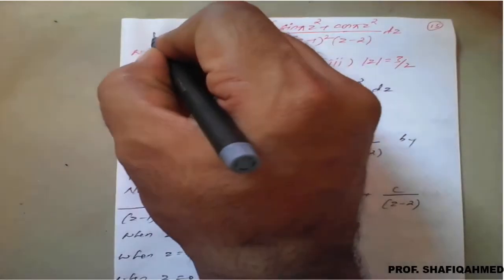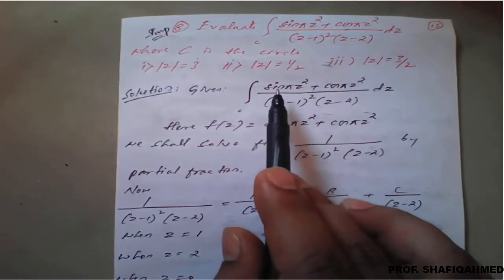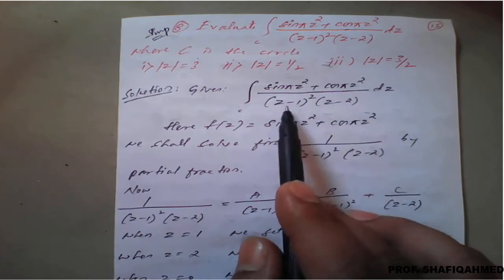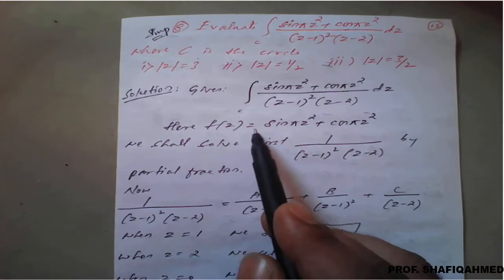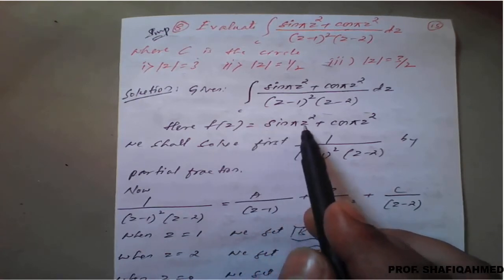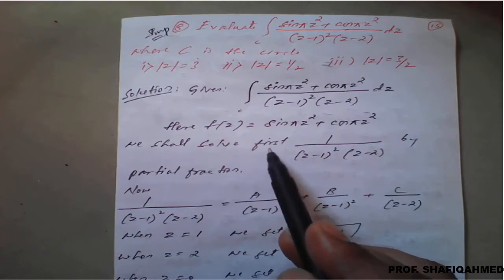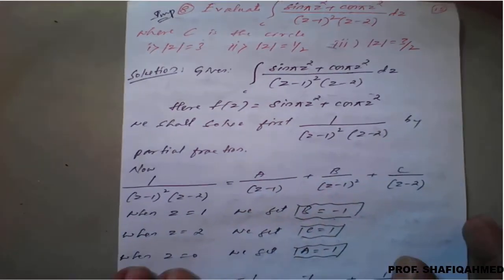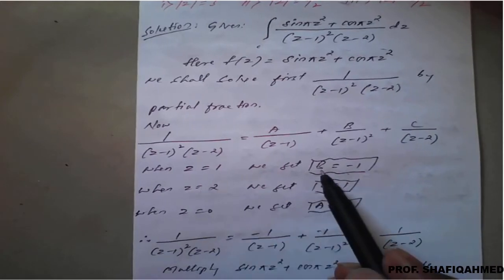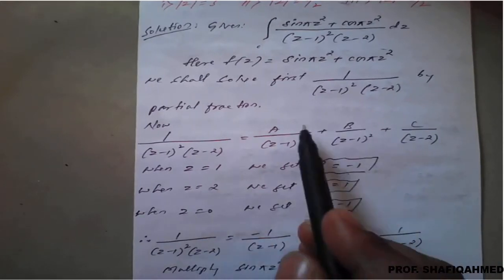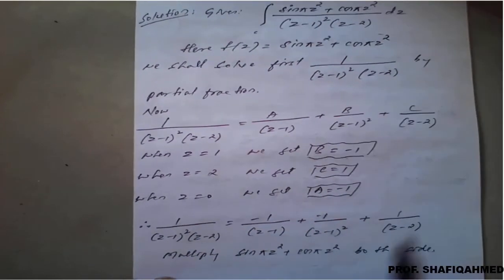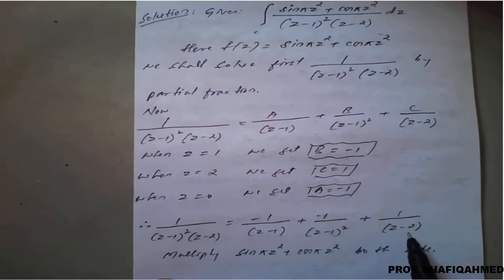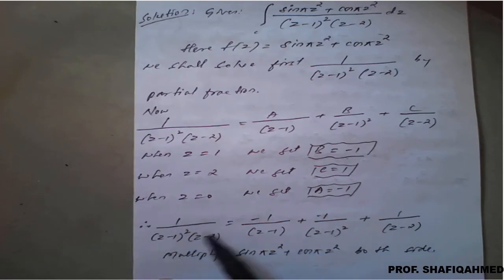This is an important examination question. Given the integration of (sin πz² + cos πz²) / [(z−1)²(z−2)], consider f(z) = sin πz² + cos πz². We first simplify 1 / [(z−1)²(z−2)] using partial fractions, and we get the values: b = −1, c = 1, and a = −1.